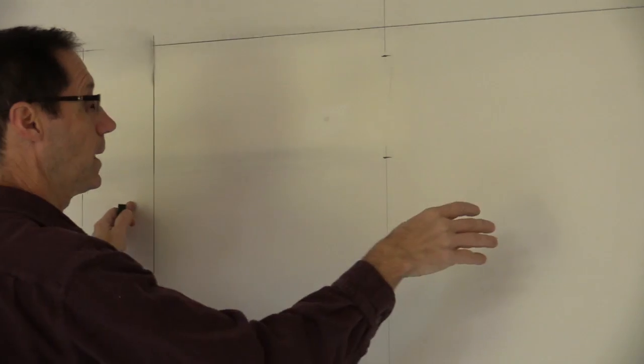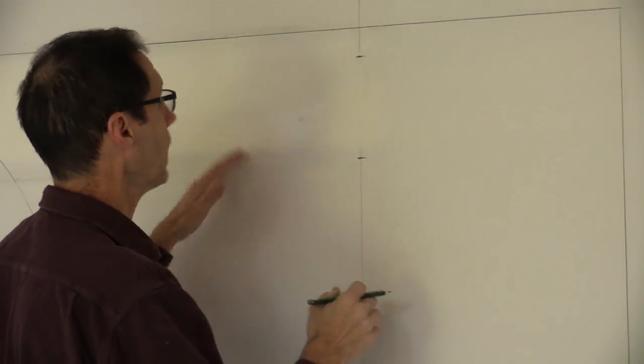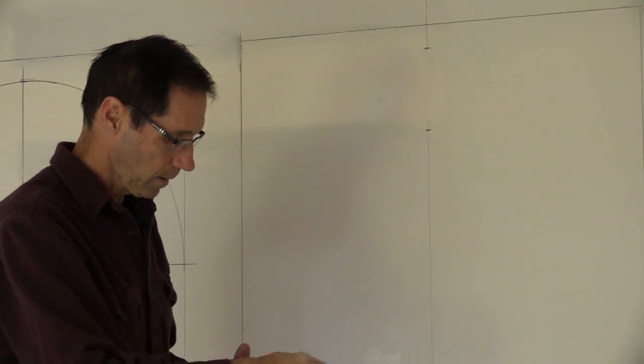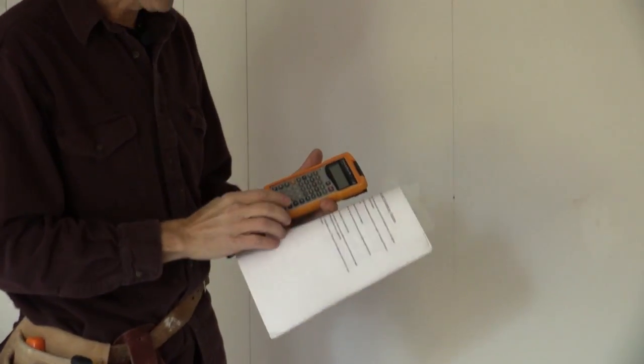Now I need to actually determine what the archway, what the radius of this segment of a circle is going to be. And in order to do that, there's a couple different ways. We have a construction master calculator that will calculate it out for me.